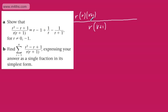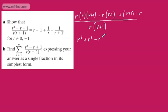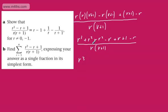On the second term we need minus r multiplied by r plus 1. On the third term we're missing r plus 1, and on the last part we're missing r. Now we can expand all of this out. This gives me r squared multiplied by r which is r cubed, and r squared multiplied by positive 1 gives r squared. Then we have minus r squared minus r plus r plus 1 minus r, all over r(r+1).